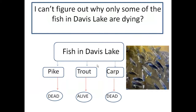Science tends to classify frequently. For example: 'I can't figure out why only some of the fish in Davis Lake are dying.' Your ruling principle is fish in Davis Lake, and you would divide into types of fish: pike, trout, and carp. You would explore which ones are dead — pike and carp — and which ones are alive — trout. This would help you understand why a certain type of fish can survive while others die.